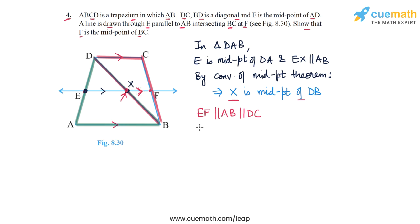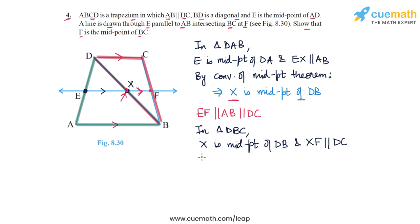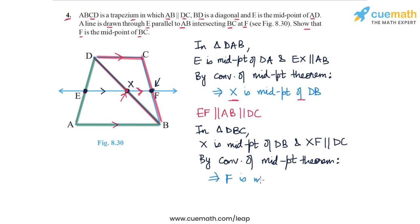So in triangle DBC, X is the midpoint of DB and XF is parallel to DC. By the converse of the midpoint theorem, we can claim that point F is the midpoint of BC. So F is the midpoint of BC, and this completes our proof.